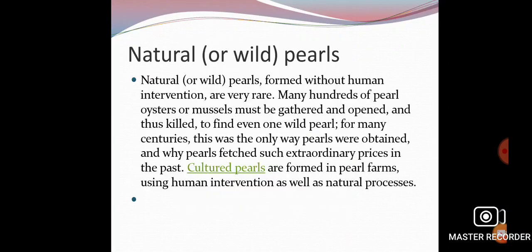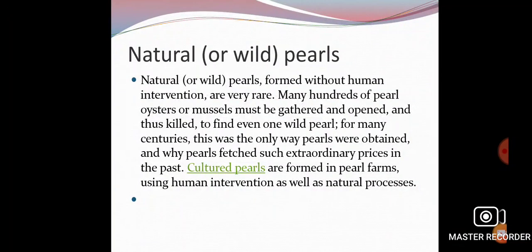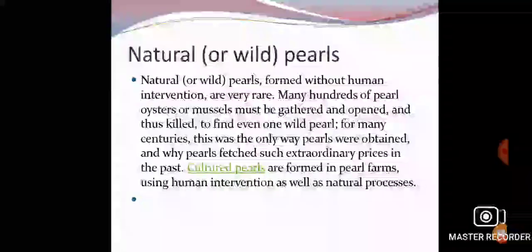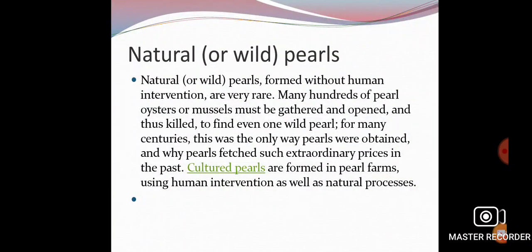The pearls obtained from oysters are of two types: natural pearl and cultured pearl. Natural pearl is formed without human intervention, and they are very rare. For natural pearl, hundreds and thousands of oysters and mussels are collected and they are opened to extract the pearls from between the two shells inside their body.